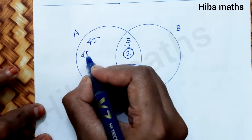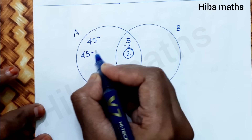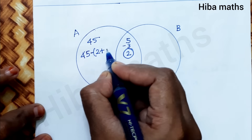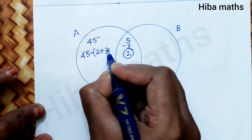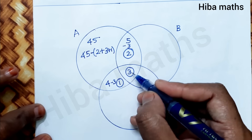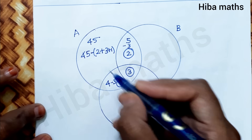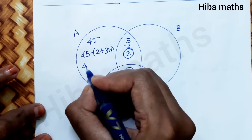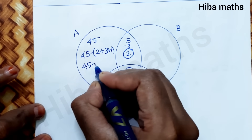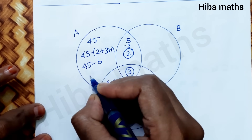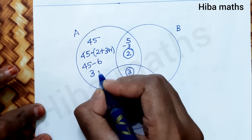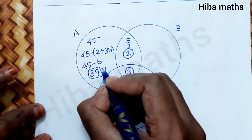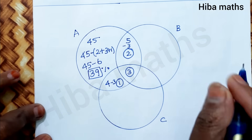For only language A: we take 45 and subtract the overlapping portions. 45 minus 6 equals 39. So only language A is 39%.